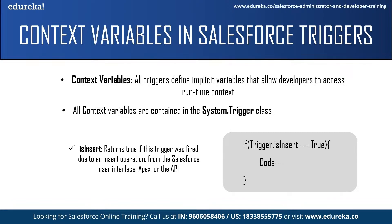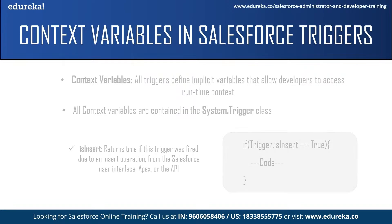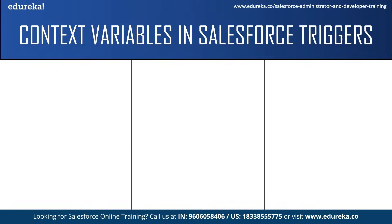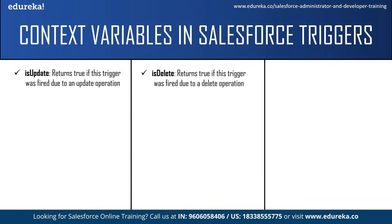Here is the syntax showing how to use a context variable in code: if Trigger.isInsert == true, only then the set of code will be executed. It checks for a condition and only if the condition is true will the code execute, otherwise it won't. The next context variable is isUpdate — this returns true if the trigger was fired due to an update operation. Next is isDelete — this returns true if the trigger was fired due to a delete operation.